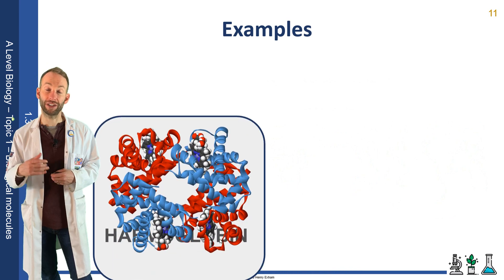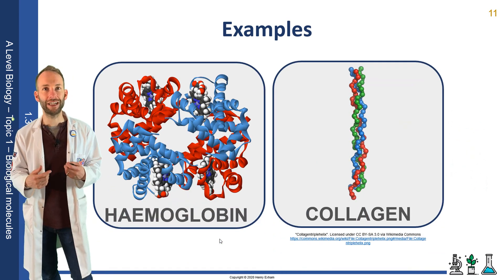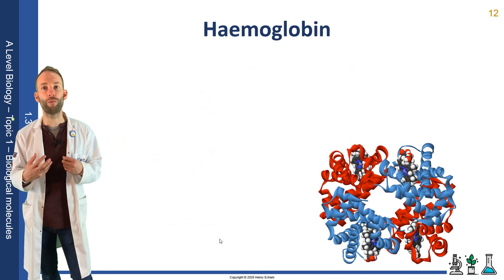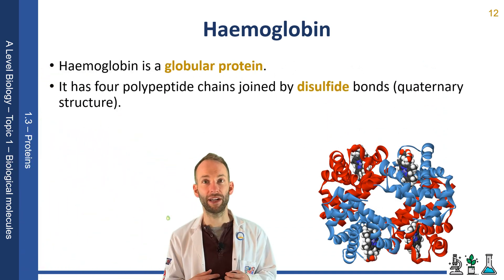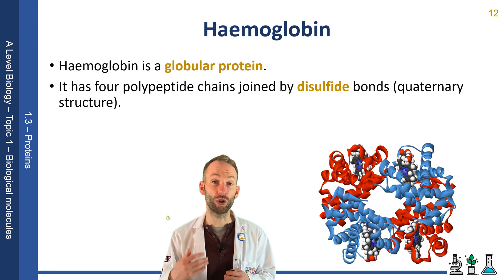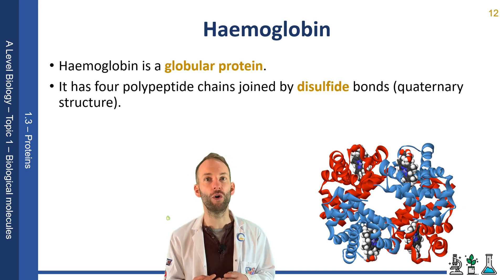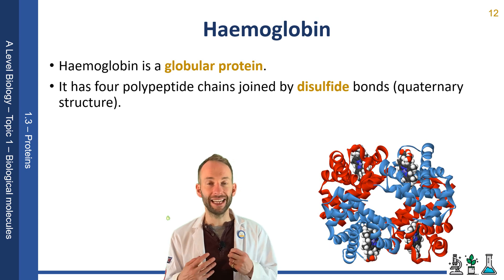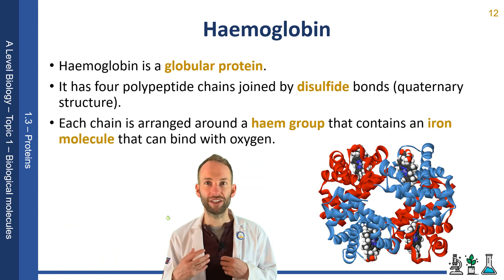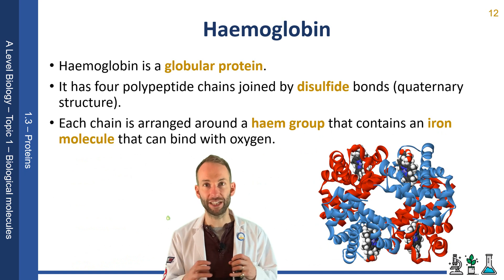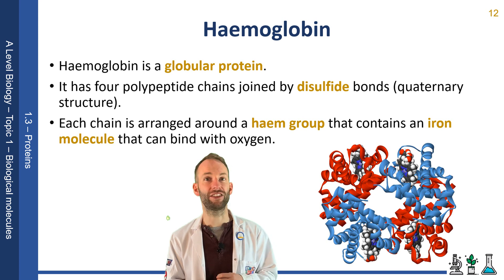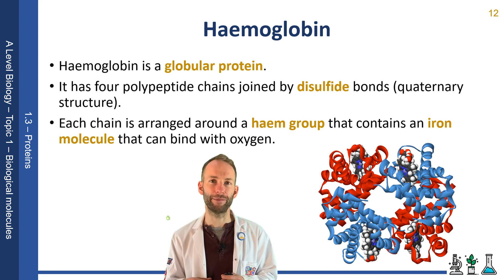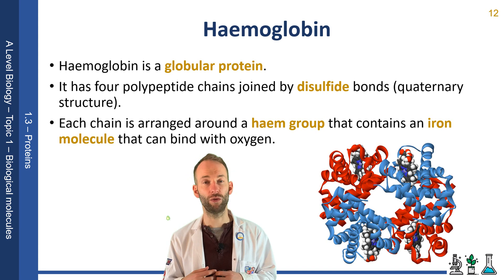There are two examples of proteins we're going to look at: hemoglobin and collagen. Hemoglobin is an example of a globular protein. It has four polypeptide chains joined together by disulfide bonds, so we say this protein has quaternary structure. Each chain is arranged around something called a heme group, which contains an iron molecule that combines with oxygen. You'll be familiar with hemoglobin in red blood cells as the molecule which binds to oxygen to help carry it around the body. It does that because of this iron molecule, which we call a prosthetic group, because it's not part of an amino acid.